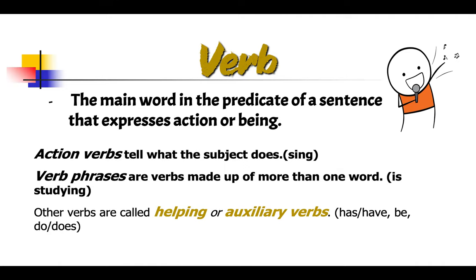A verb is the main word in the predicate of a sentence that expresses action or being. Action verbs tell what the subject does — in this case, we have sing. Verb phrases are verbs made up of more than one word, like is studying. Other verbs are called helping or auxiliary verbs, like has, have, be, does, do.